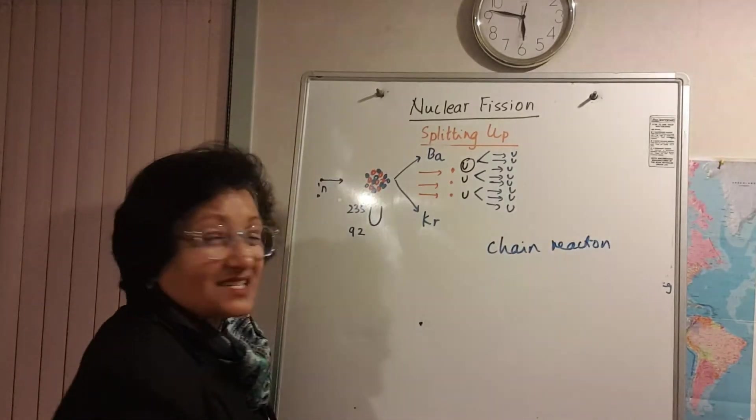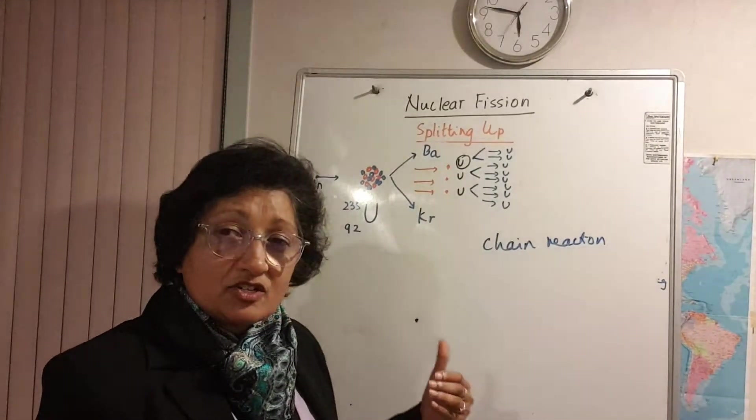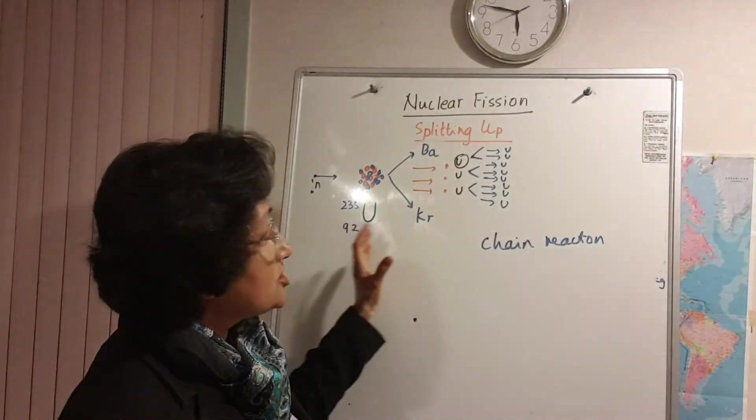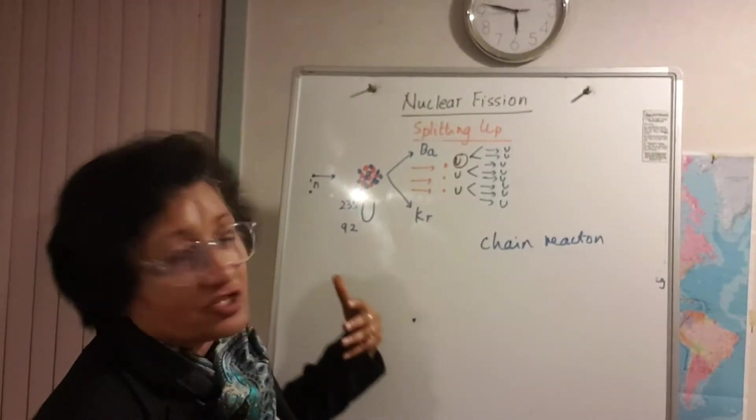Now chain reaction is probably what leads to a bomb, to destruction, but it can be controlled and used for useful purposes like in nuclear power plants where you can actually control this, you can stop it. And that's what nuclear fission is about.